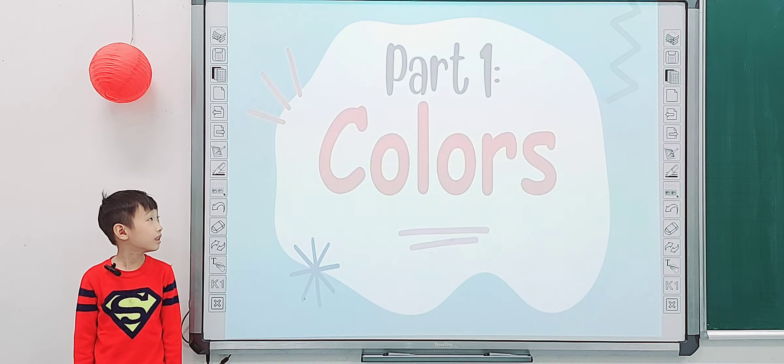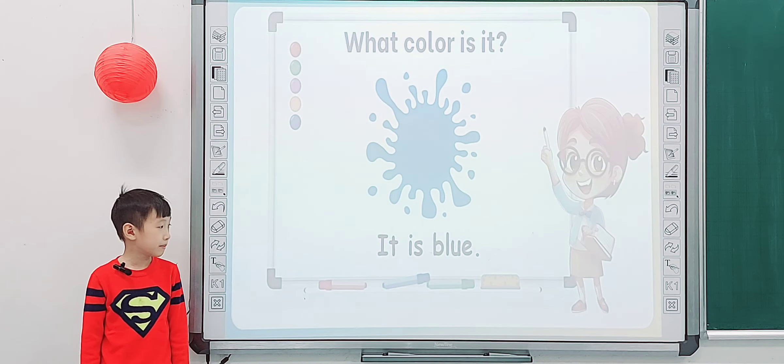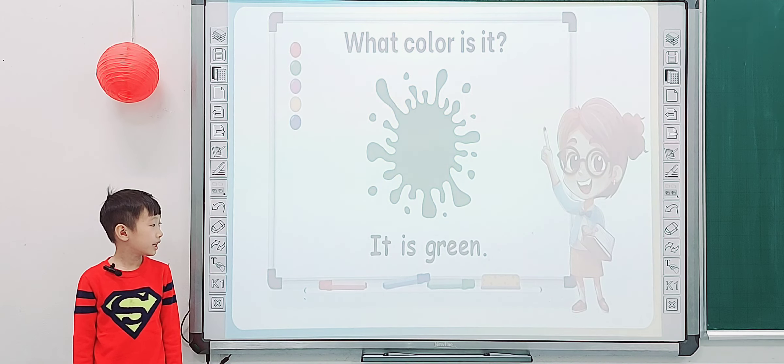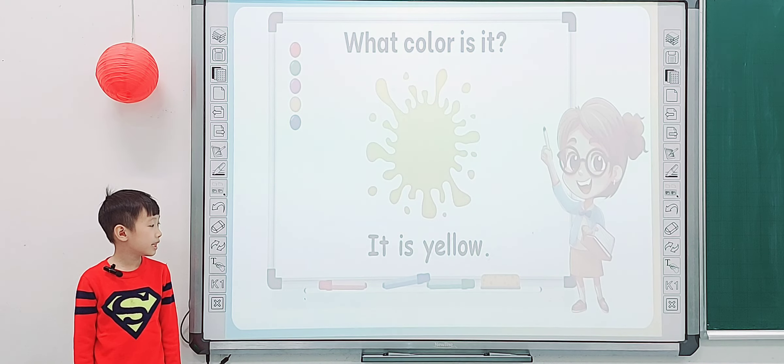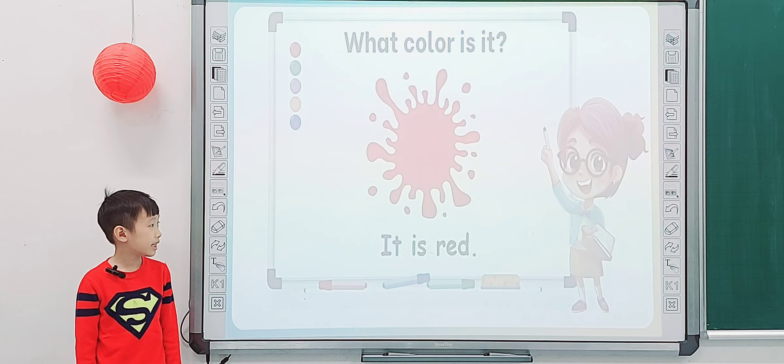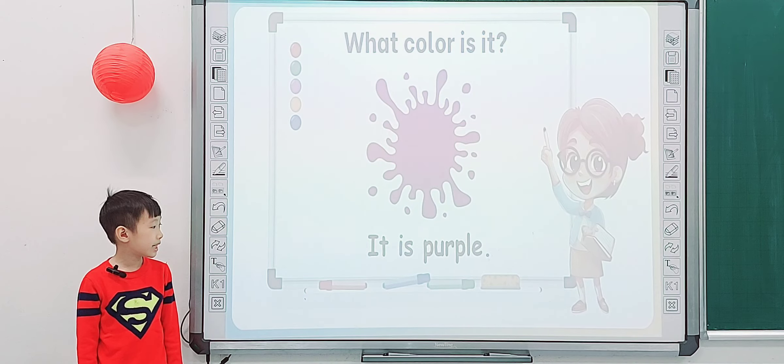And tell me, look at screen, part 1 colors. Tell me what color is it? It is blue. It is blue. It is blue. Yeah, what color is it? It is yellow. It is pink. It is red. And? It is purple.